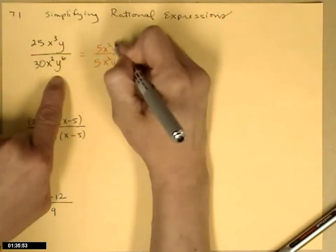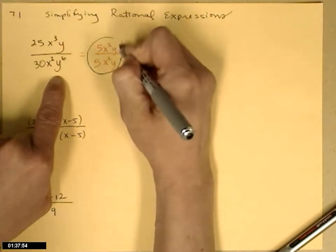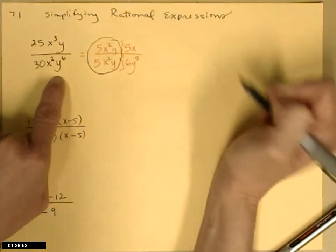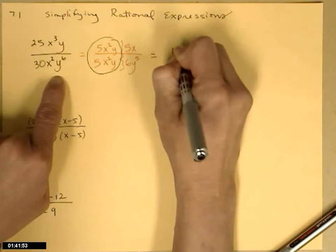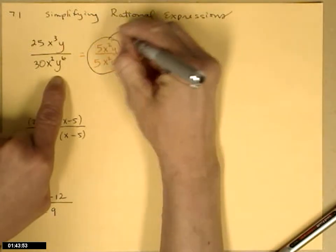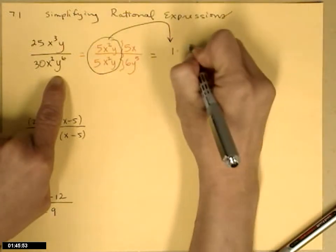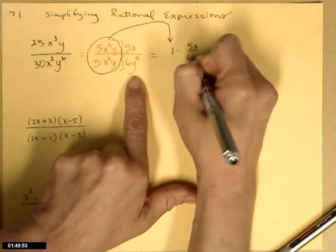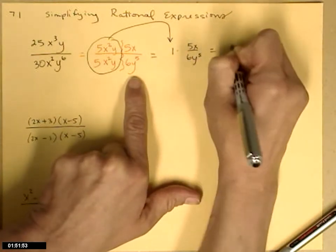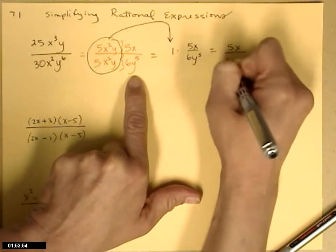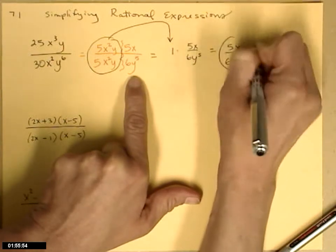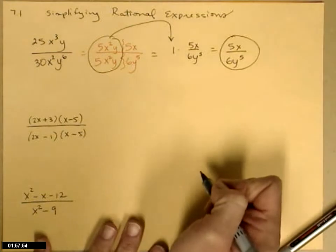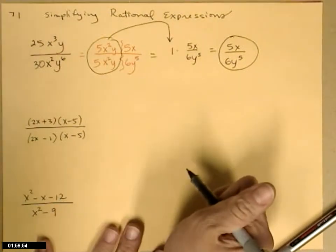Notice right here, to the left of my squiggle, I have the exact same thing in the top and bottom of a fraction, and we know from experience that that equals 1. So I have 1 times whatever was on the right-hand side of my squiggle, and then 1 times anything is just what you were multiplying by. So that's the reduced form of the original fraction.